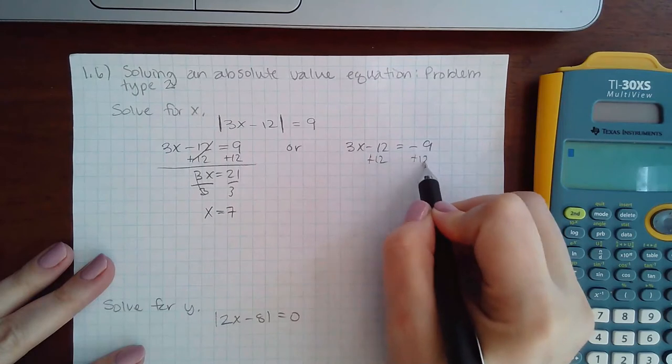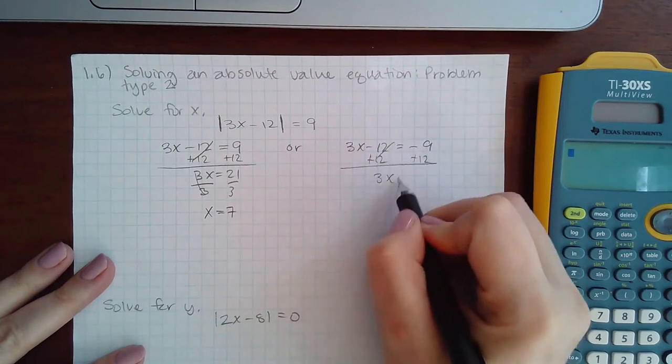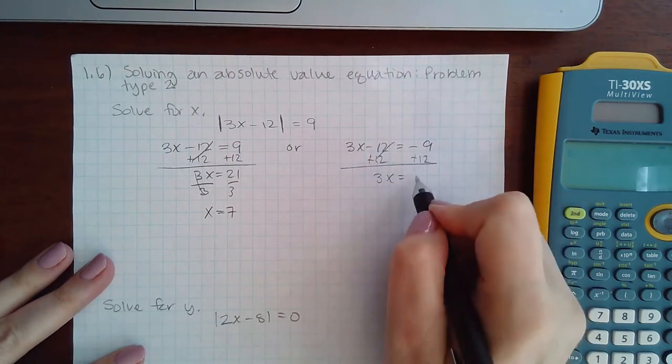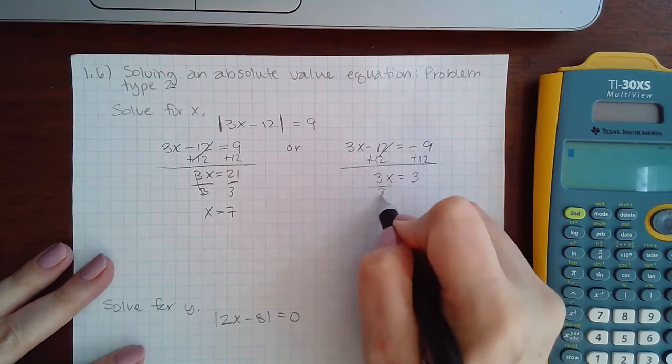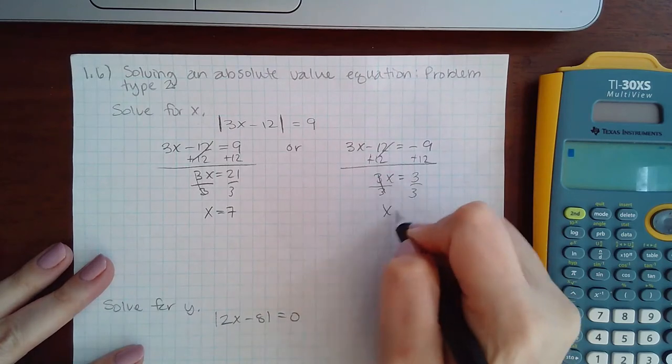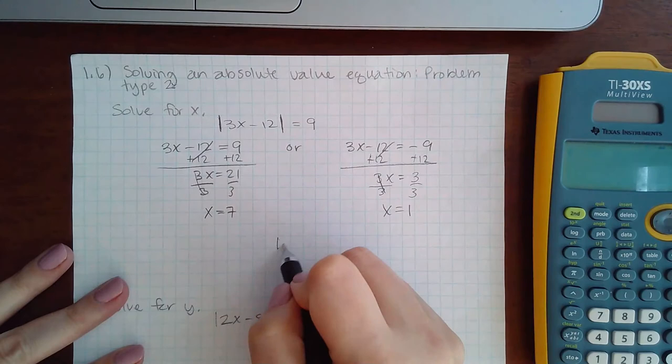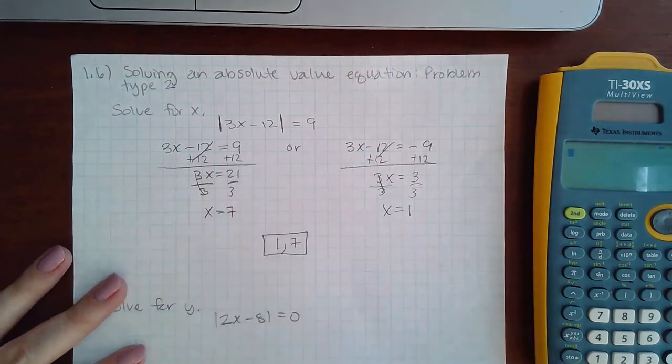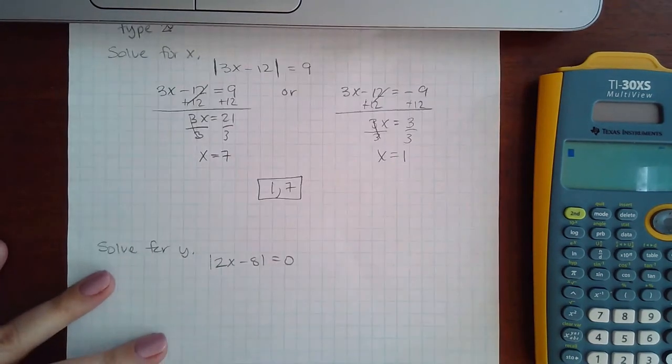And then the same thing on the other side, except the answer won't be the same because what was on the right hand side is not exactly the same. So then I get two answers: 1 and 7.